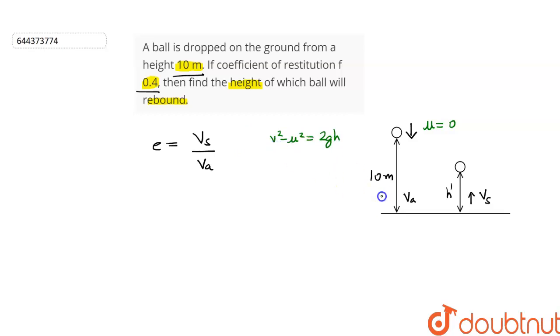U is 0 and V is VA. So, this can be written as VA square is equal to 2GH. The value of H is 10 meters. So, this can be written as VA is equal to under root of 20G.